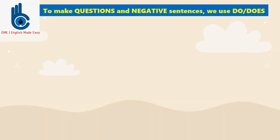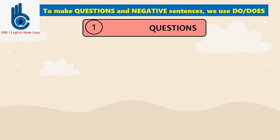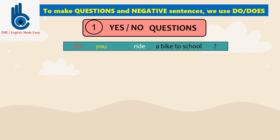In the previous dialogue, we can see that to make questions and negative sentences, we use do or does. First, we are going to see how to make questions. First, we will see the yes-no questions — kalimat yang jawabannya ya atau tidak. From some examples in the dialogue, we can hear: do you ride a bike to school?